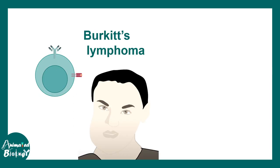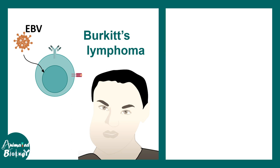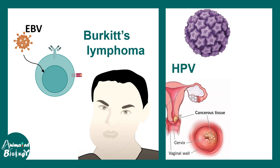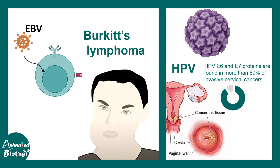In Burkitt's lymphoma, where Epstein-Barr virus infection has been reported, EBV proteins are displayed on class 1 or class 2 MHC molecules and are treated as foreign antigens, so immune cells engage against them. In cervical cancer, HPV E6 and E7 proteins are associated with cancer progression and immunity against these cancer cells.